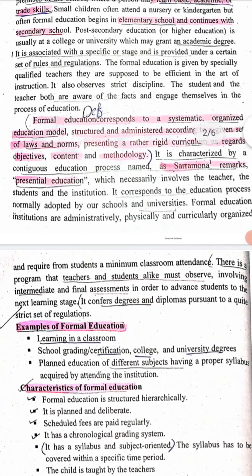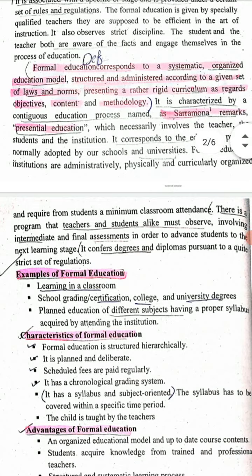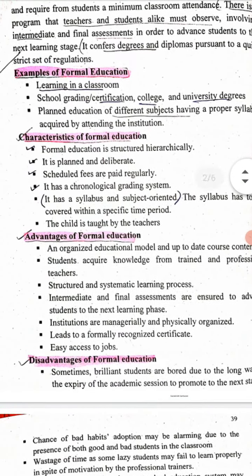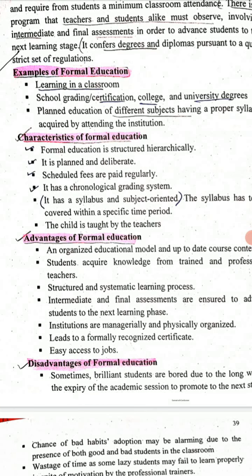Now we will see the examples of formal education. First of all, learning in a classroom is a formal education. This includes school grading, certification, college and university degrees, planned education of different syllabi and subjects with a proper syllabus, acquired by attending the institution.